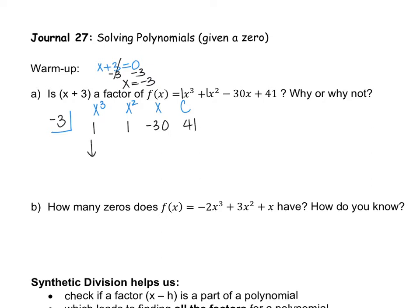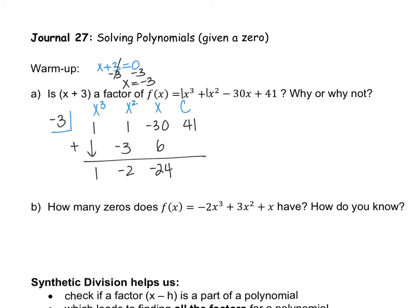Always bring down the first number, then multiply the bottom number by the number inside the box. 1 times negative 3 is negative 3. Add vertically: 1 minus 3 gives us negative 2. Negative 2 times negative 3 gives positive 6. Negative 30 plus 6 gives me negative 24. Negative 24 times negative 3 is positive 72. Then 41 plus 72 gives me 113. The remainder is always the last digit, so our remainder is 113.